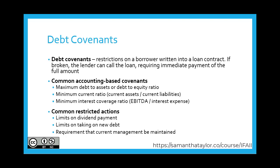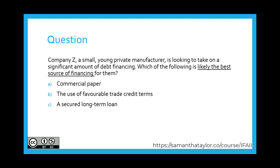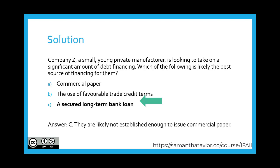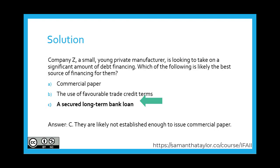Let's look at a question. Company Zed, a small young private manufacturer, is looking to take on a significant amount of debt financing. Which of the following is likely the best source of financing for them: commercial paper, the use of favorable trade credit terms, or a secured long-term loan? If you said C — a secured long-term loan — that would be the best answer. They are likely not established enough, being a young small private manufacturer, to issue commercial paper, and likely not powerful enough to negotiate very good credit terms with suppliers. A bank loan is likely accessible to them and will give them a favorable rate and tax-deductible interest.